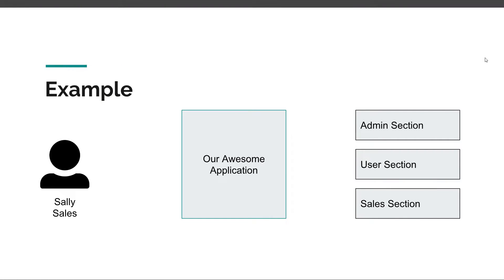Let's illustrate this with an example. Let's take Sally — Sally is a user for an online sales app. Sally works in the sales department, so the first thing she does when she arrives to work is she wants to sign in to the sales app. Sally signs in with her credentials, and if those credentials are correct, we say that Sally is authenticated.